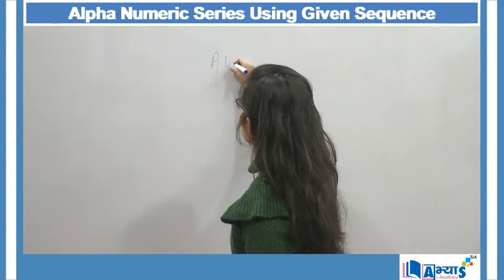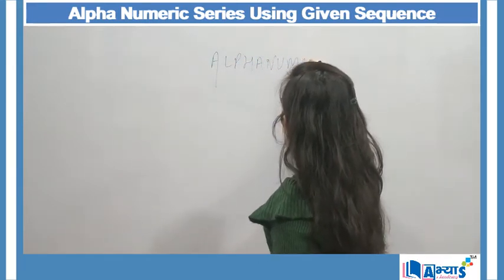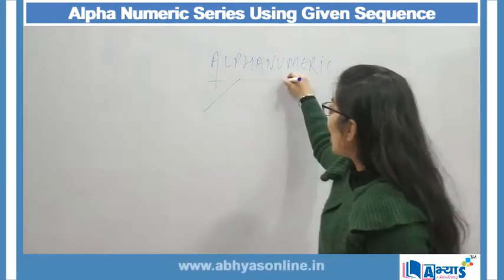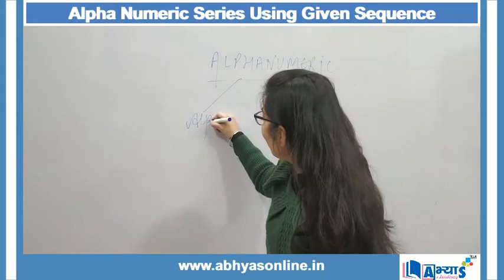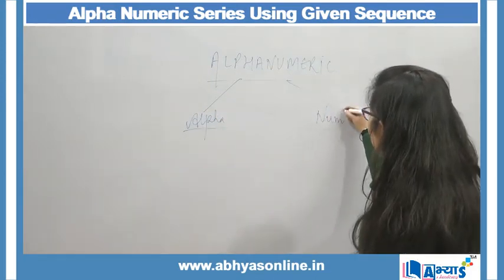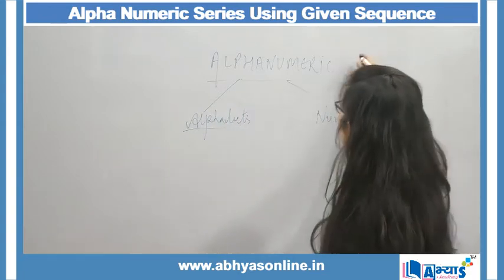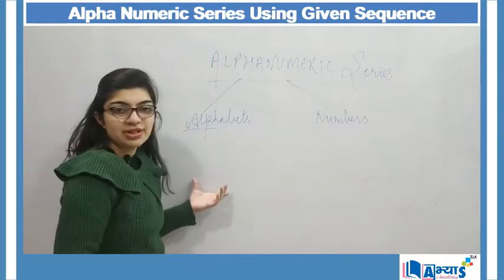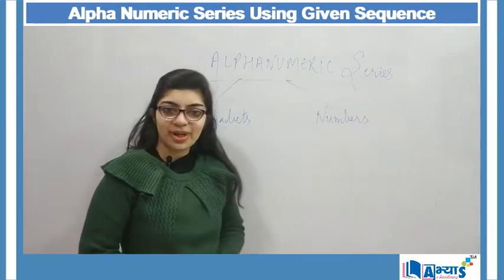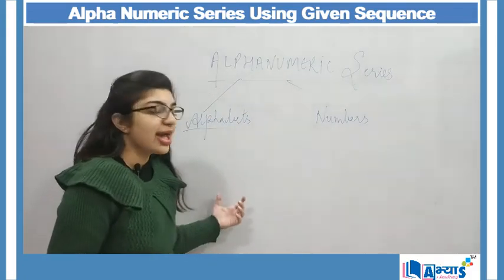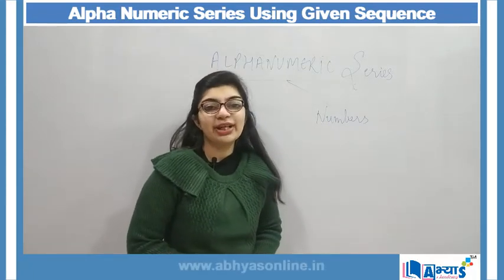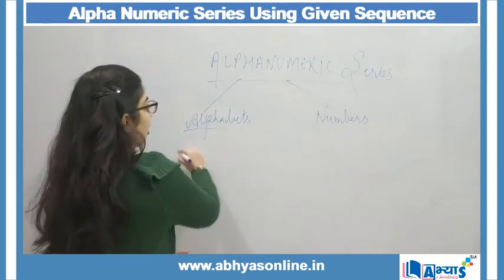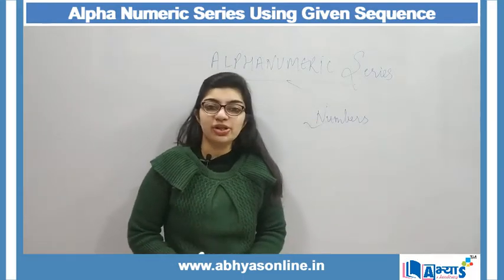Today's topic is alphanumeric series. Alphanumeric is derived from two words: alpha and numeric. Alpha ka matlab hota hai alphabets, and numeric ka matlab hota hai numbers. So we are talking about a series that contains alphabets and numbers. It is not necessary that the series has only alphabets and numbers — along with that we can add symbols as well.